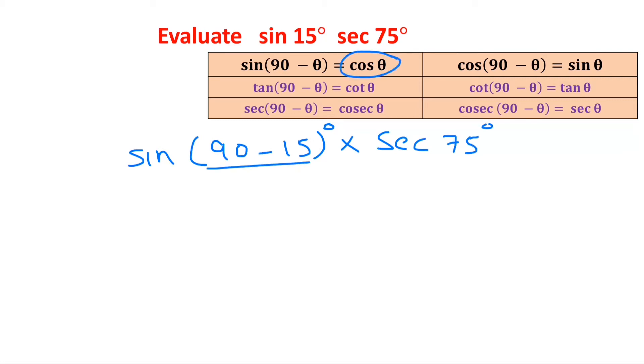is cos theta, so we can write this as cos 15 degrees times secant 75 degrees. We know that cos is the multiplicative inverse of secant, so we can write cos as 1 by secant 15 degrees times secant 15 degrees. These two will get cancelled and the answer is 1.